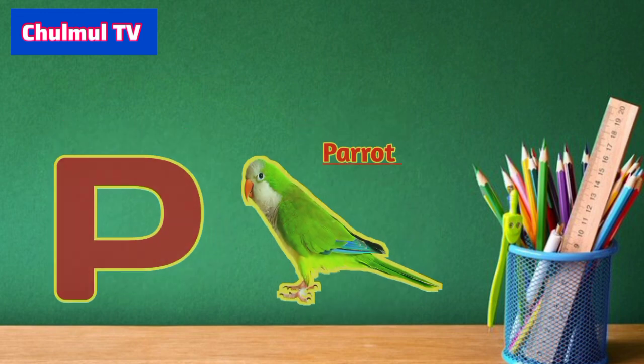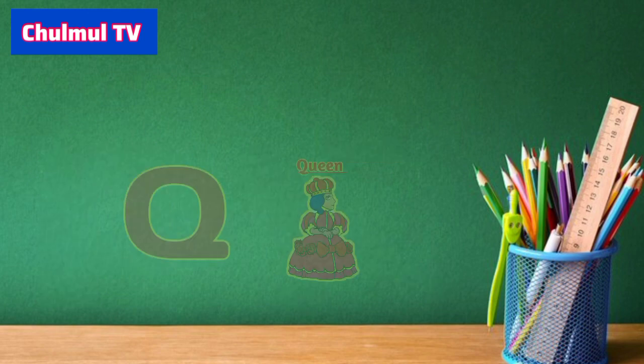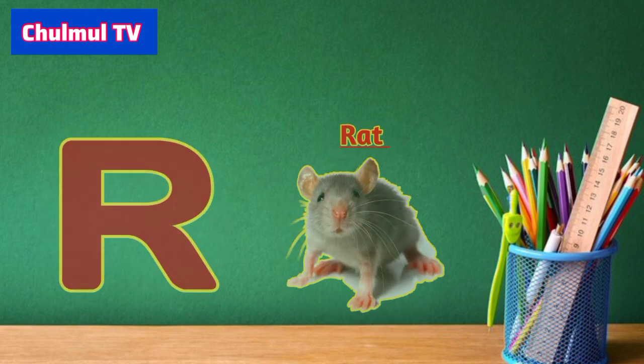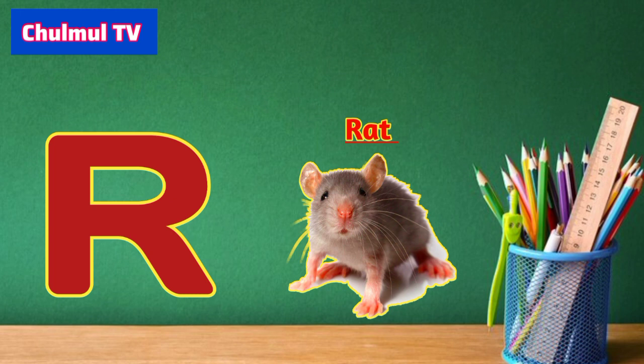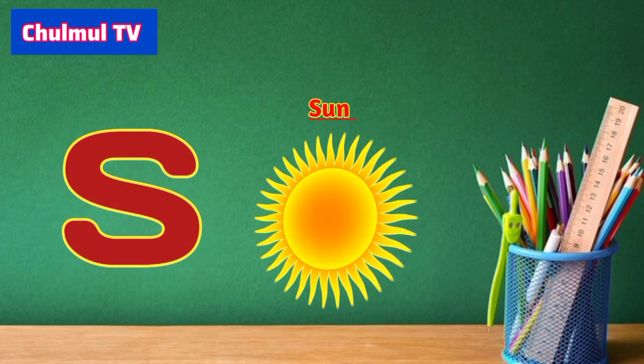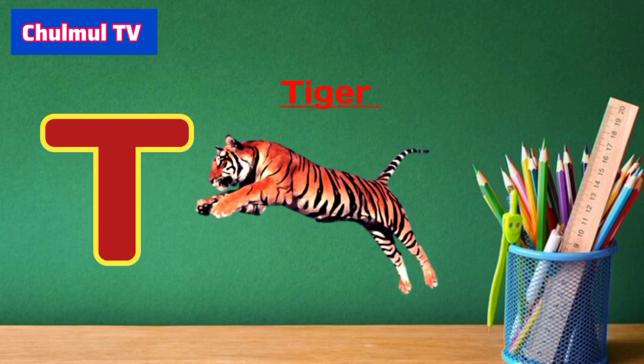B for parrot, Q for queen, O for red, S for sun, D for tiger.